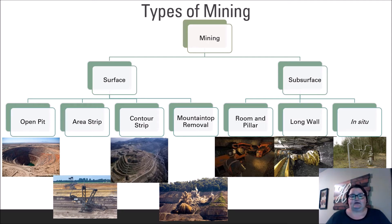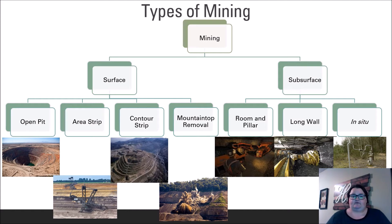Subsurface mining takes place beneath the surface of the crust in what we think of as traditional mines. Shafts can be dug vertically or at an angle, and the majority of subsurface mines fall into one of two categories: long wall or room and pillar. These terms describe the support system of the mine. In room and pillar, wide areas are cleared out to obtain material, but thick columns of stone are left to support the weight of the crust above. Long wall mining is done through the use of machinery that strips material horizontally from the rock. Hydraulic supports hold up the roof until the machine moves further along, then the supports are moved and the roof is allowed to collapse in mined areas.